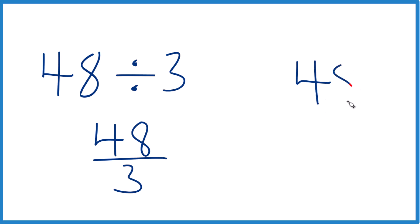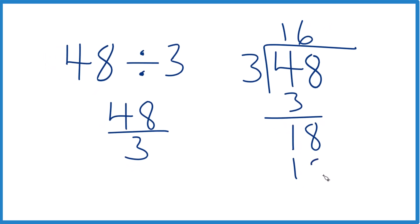We have 48, and we want to know how many times 3 goes into 48. Great, so 1 times 3, that's 3, and we have 1 left over. 3 doesn't go into 1. Let's bring the 8 down, and 6 times 3, that's 18, subtract, no remainder. So 3 goes into 48 16 times exactly.